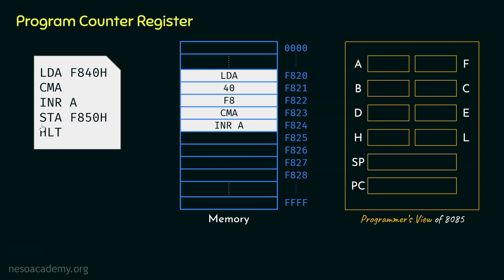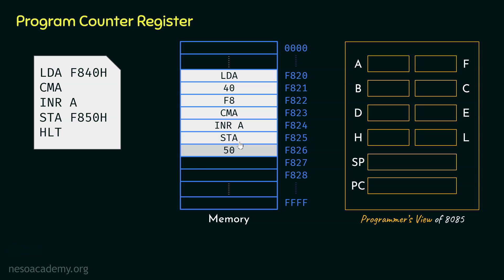The next instruction STA F850, just like LDA, is also a 3-byte instruction. So in location F825 we store STA, in F826 we store the lower order byte 50, and in F827 we store the higher order byte F8. Finally, the HLT instruction is a 1-byte instruction, so it will be stored in location F828. We have now loaded the entire program into memory.